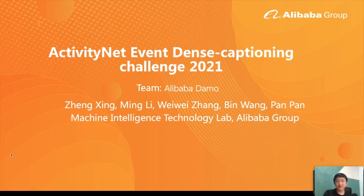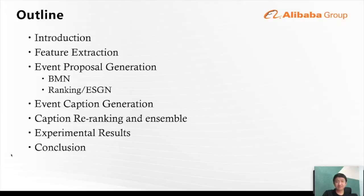Hello everyone. In this talk, I'll give a brief introduction to our approach to the ActivityNet Dense Captioning Challenge 2021. Our team members are from Alibaba's Machine Intelligence Technology Lab. We'll start with an introduction and then describe the four components in our proposed framework: feature extraction, event proposal generation, event caption generation, and caption re-ranking and ensembling. Finally, we'll talk about the experiments and conclusion.